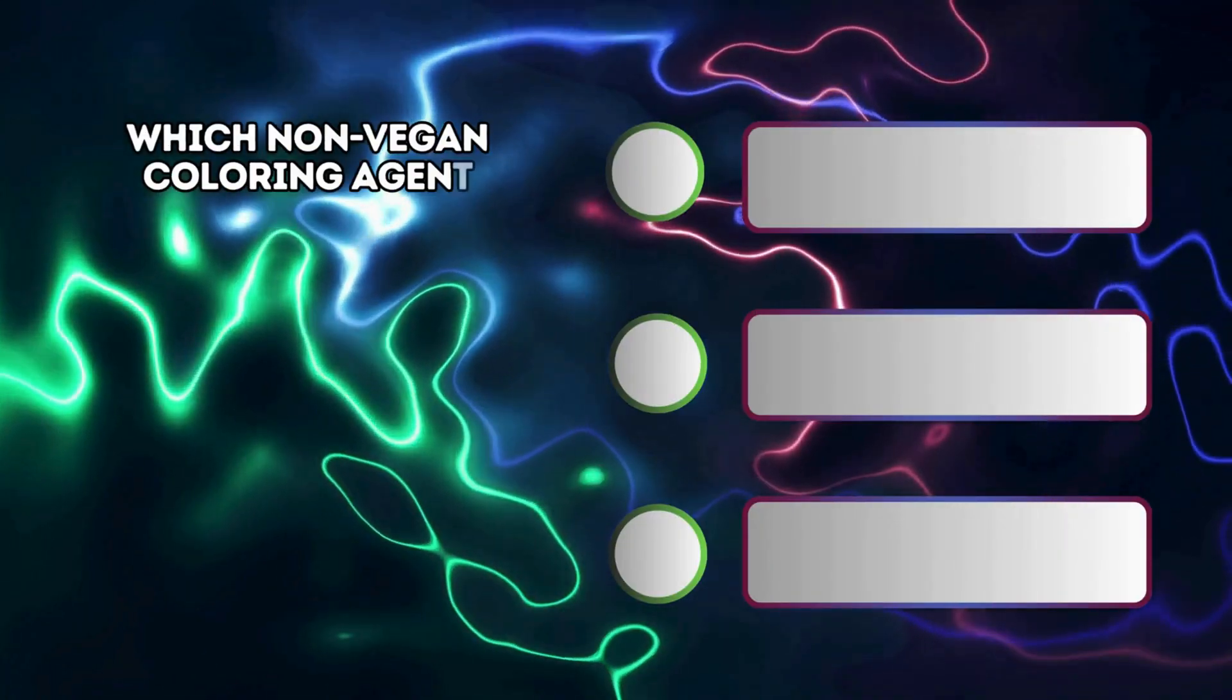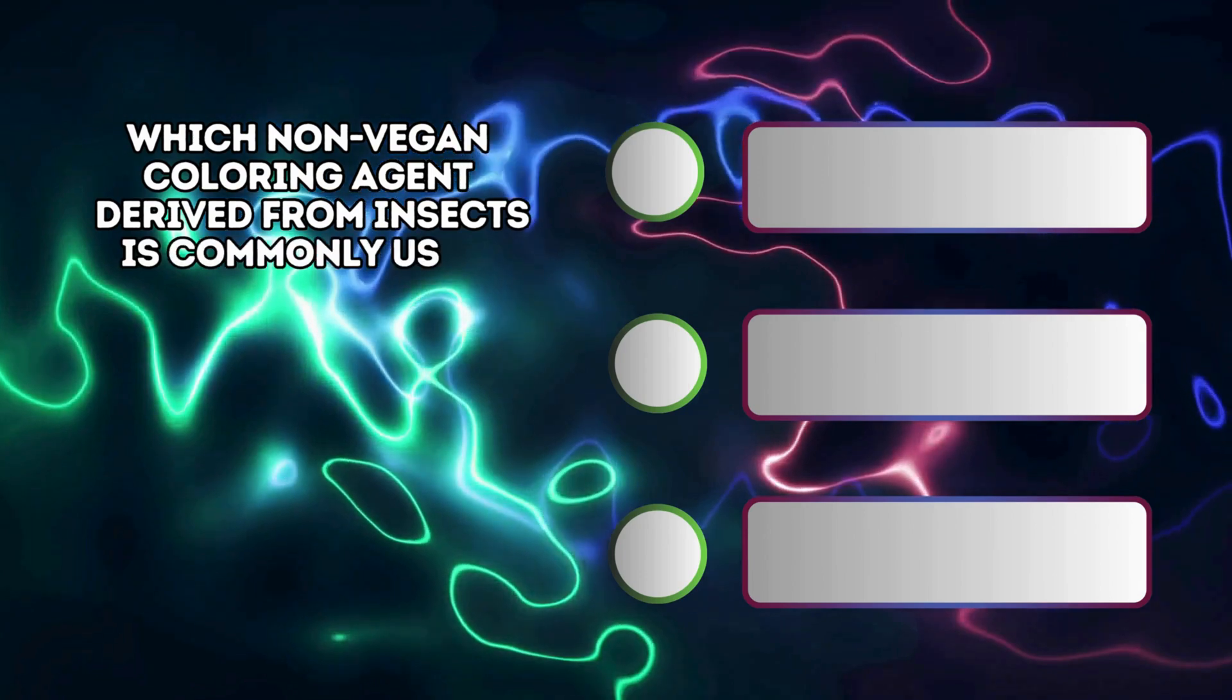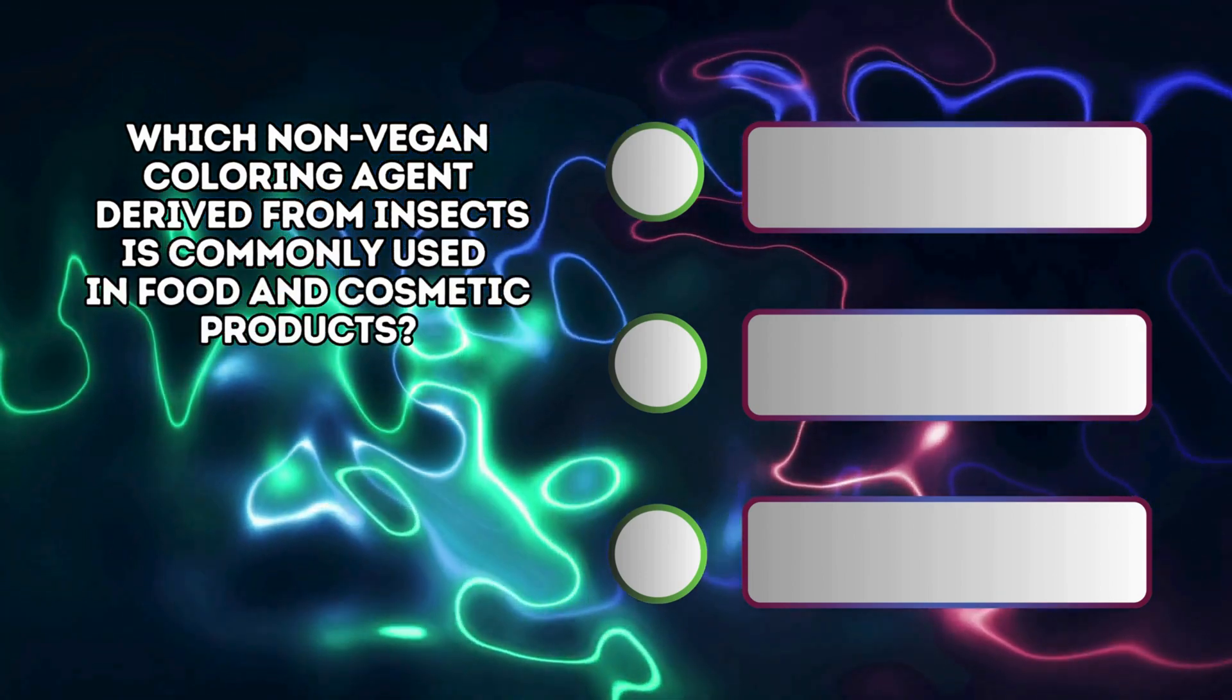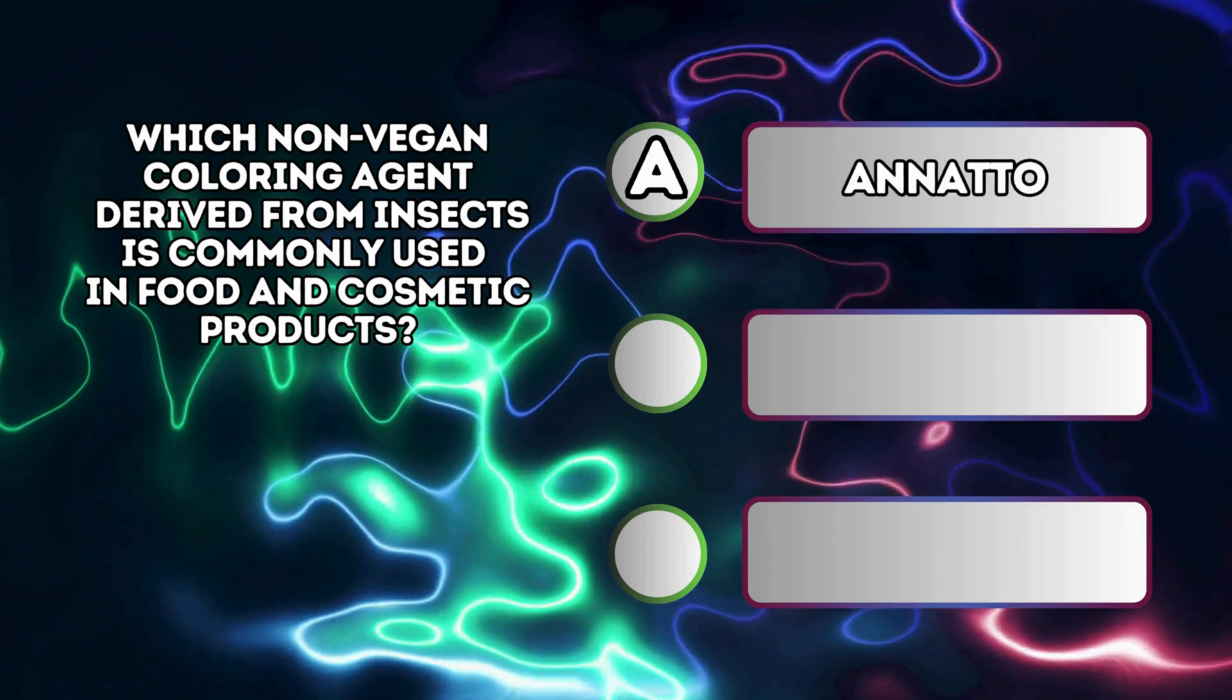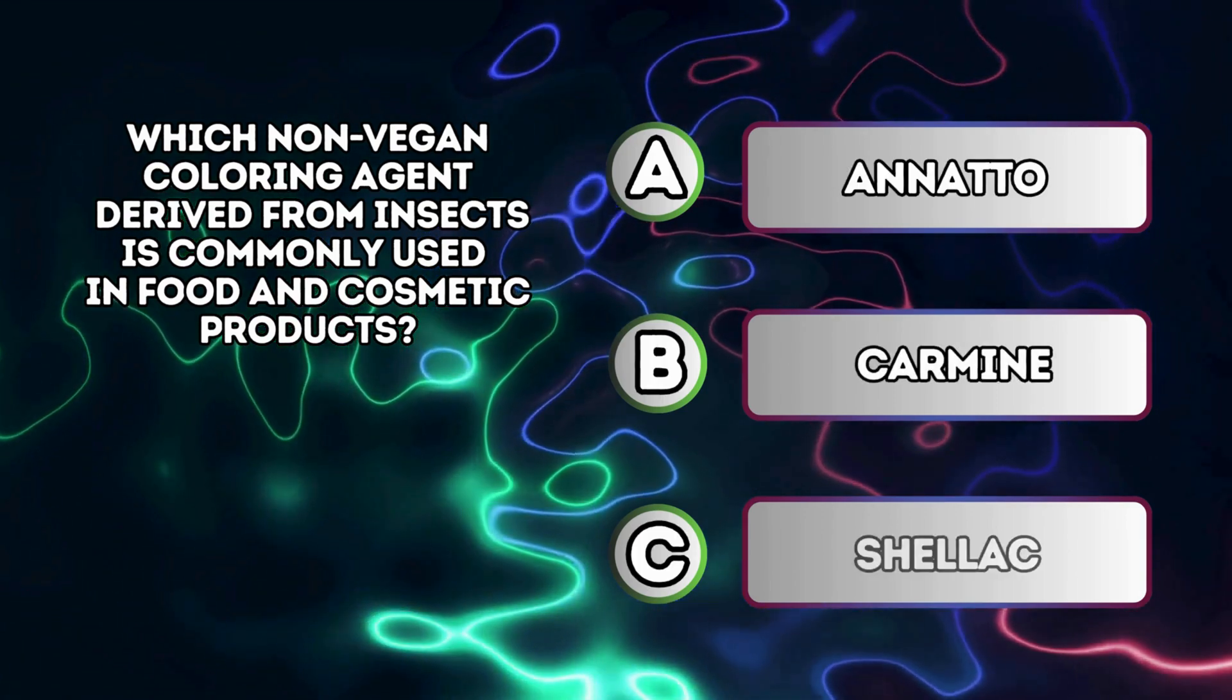Which non-vegan coloring agent derived from insects is commonly used in food and cosmetic products? A. Annatto B. Carmine C. Shellac